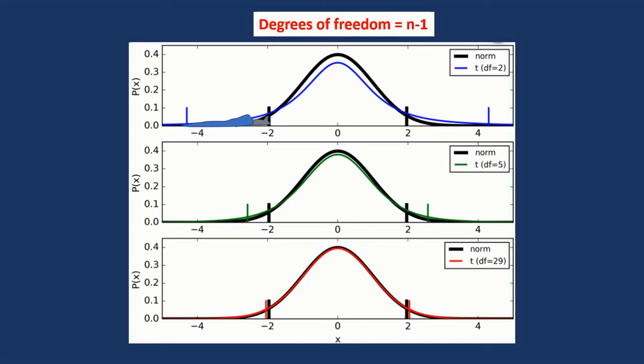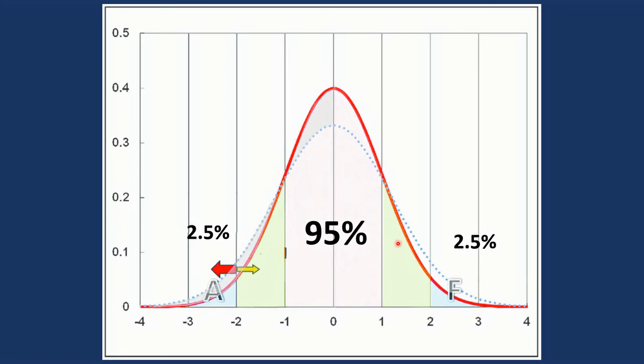Here, the red is the normal distribution. The dotted blue line is small size sample. So if you want to check the area 95%, in the normal distribution, it is around two. So two below, two above. This is two and a half, this is two and a half, and here we have the 95%.